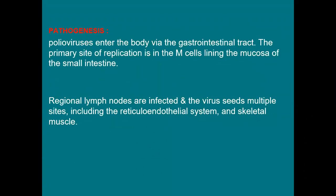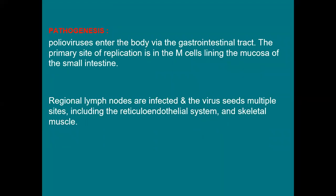A few notes about the pathogenesis of poliovirus — how the poliovirus reaches the CNS and causes paralysis. The poliovirus enters the body via the GIT by the feco-oral route. The primary site for replication of the virus is in the M cells lining the mucosa of the small intestine.